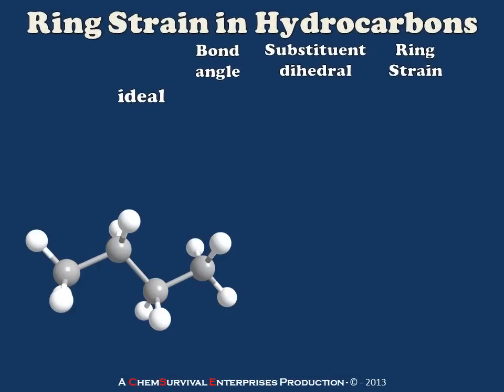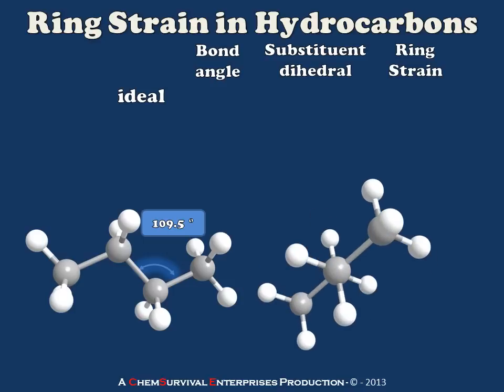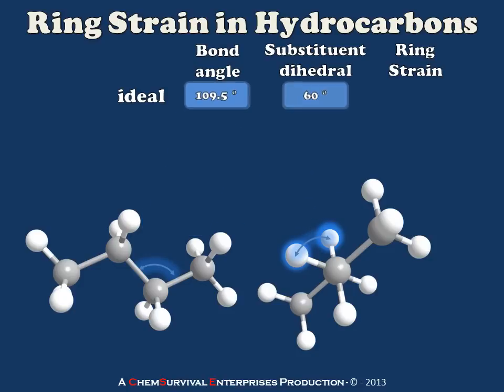Let's begin by thinking about a simple linear alkane like butane, and concentrate on the CH₂ groups in the middle. We know that the angle among any carbons within that group should be about 109.5 degrees. And if we look down along the carbon-carbon bond in the middle, we should see substituent dihedrals of 60 degrees, which corresponds to a completely staggered conformation. When the molecule is free to twist, rotate, and flex any way it chooses, it can obtain these ideal angles and therefore is expected to have no ring strain whatsoever — which shouldn't be surprising because it's not a ring.